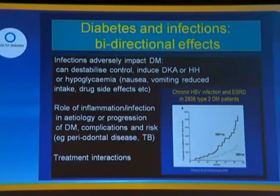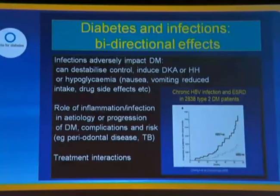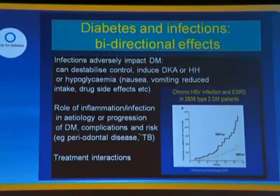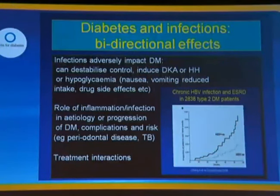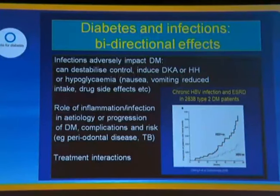It's important to remember that diabetes and infections can affect each other and operate in both directions. Infections can destabilize diabetic control and influence diabetic emergencies — both high and low blood glucose. On a more chronic setting, the role of inflammation and infection may be important in the etiology or progression of diabetes, development of complications, and so on. Both periodontal disease and TB can be highlighted in this context. Data from our own group in Hong Kong shows the development of end-stage renal failure in patients with diabetes who are either hepatitis B virus positive or negative — hepatitis B virus positive patients have a roughly two-fold greater rate of running into end-stage renal failure.